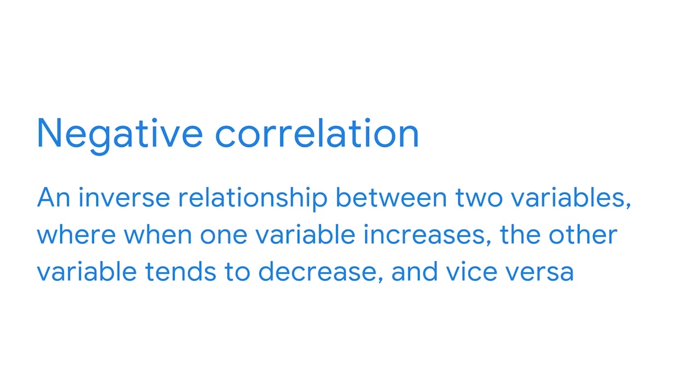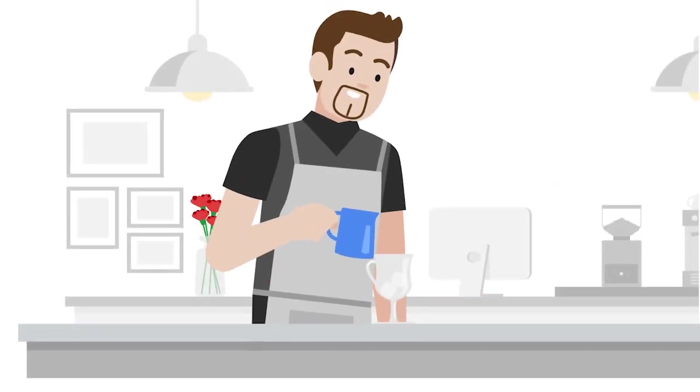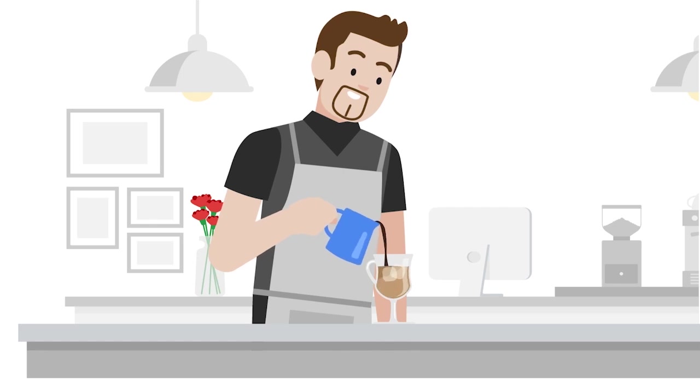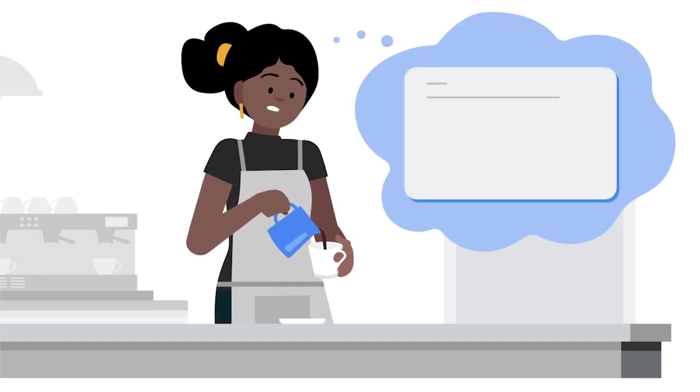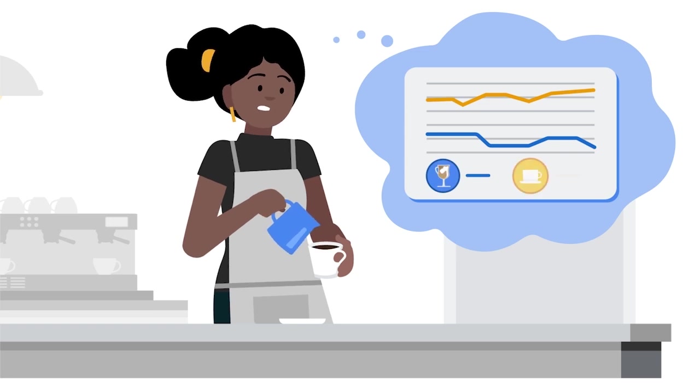Negative correlation, on the other hand, is an inverse relationship between two variables. When one variable increases, the other variable tends to decrease. For example, let's say you're still working at the cake shop and you're estimating how often to refill the iced coffee dispenser. You can model the relationship between iced coffee and hot coffee sales. As hot coffee sales increase, you might notice iced coffee sales tend to decrease. Or perhaps you're working at a media company and you're analyzing readership — as the length of news articles increases, the number of people that finish reading the article might decrease. This is also an example of negative correlation.